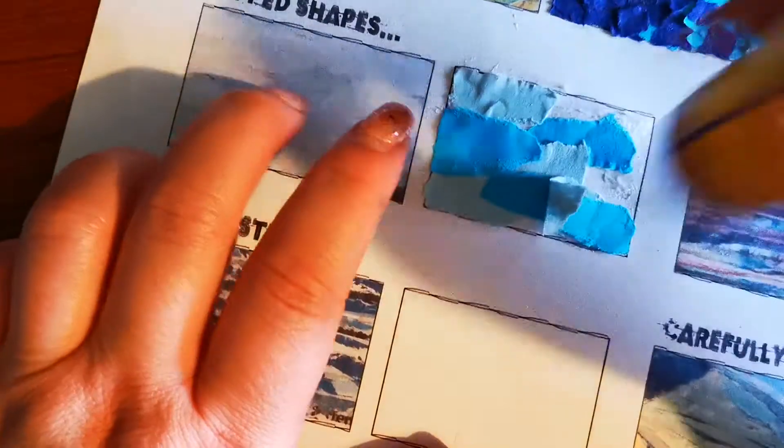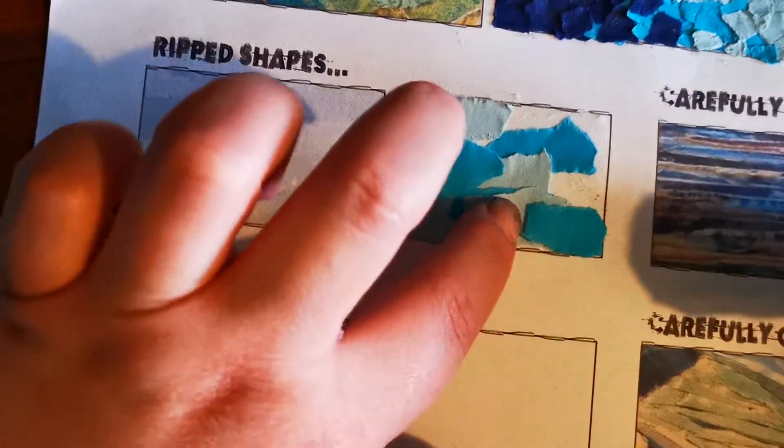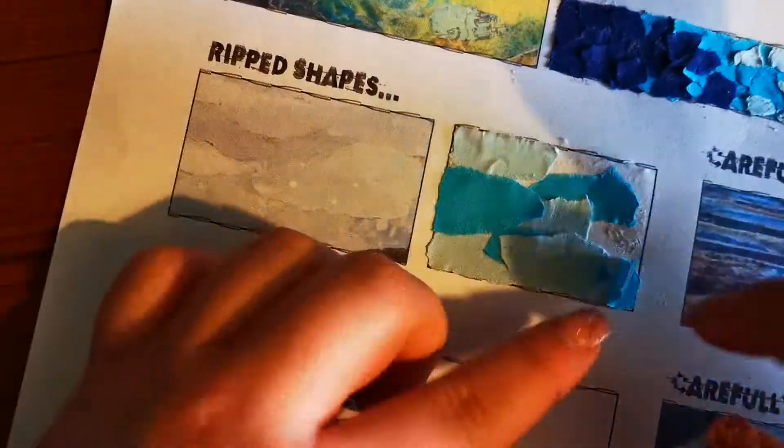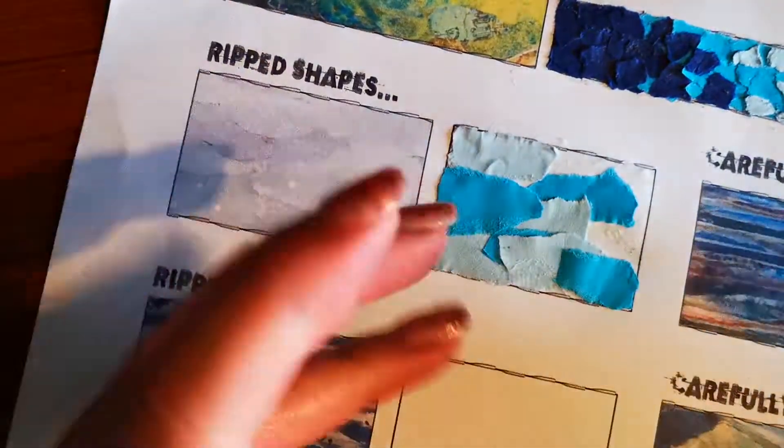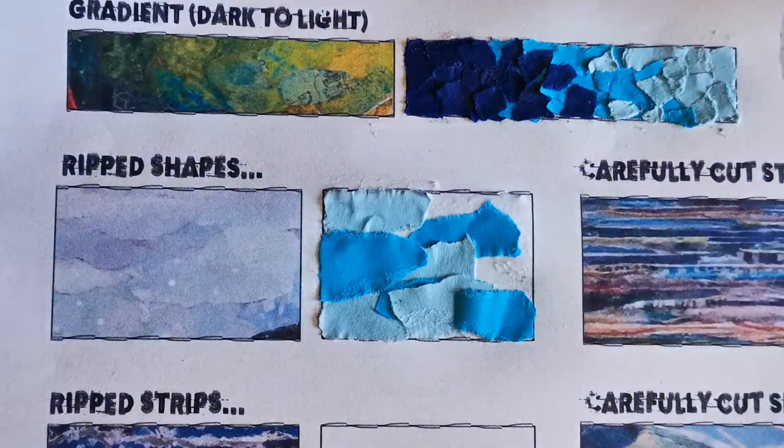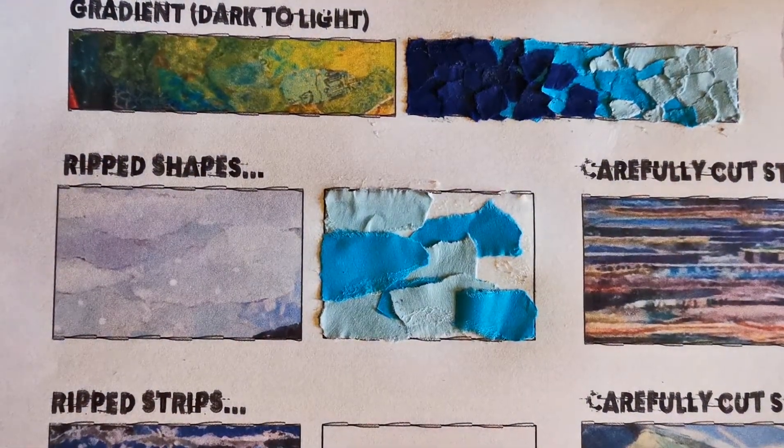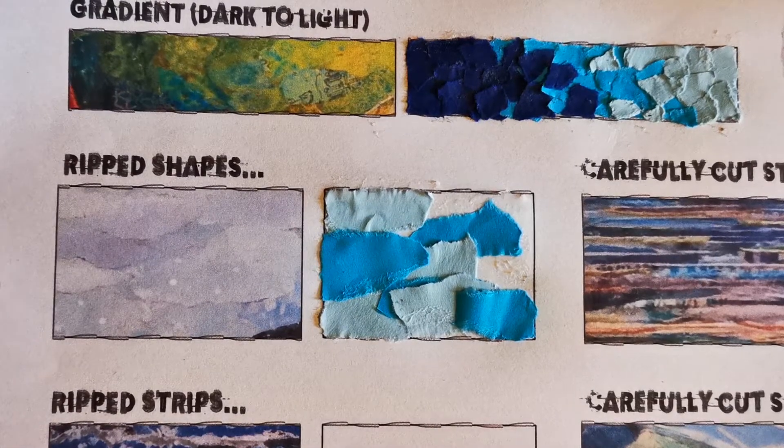If you do have an edge that sticks up just like that, just lift it, a bit of glue behind it and just push it back into place. If you do have any edges that stick up, it does look a little bit untidy as well as that. They can more than often just fall off.